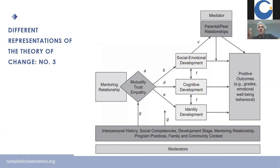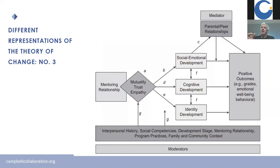The diagram also shows moderators — things that affect the relationship, such as existing interpersonal history, existing social competences, and the developmental stage of the child. Duration is an important moderator: both the length of individual meetings and the overall duration of the programme — six months, one year, two years. We'd expect longer programmes to have larger effects. But what reviews find is that duration doesn't make any difference — short duration programmes work just as well as long ones. That's a puzzle, and some reviews try to reinterpret the data rather than conclude the theories seem to be wrong.